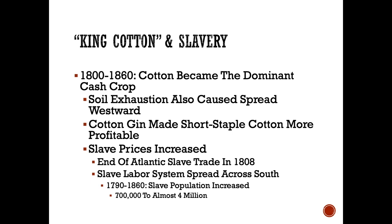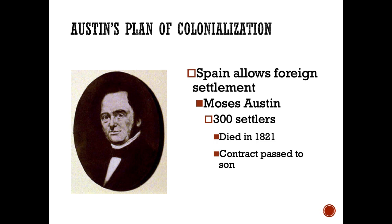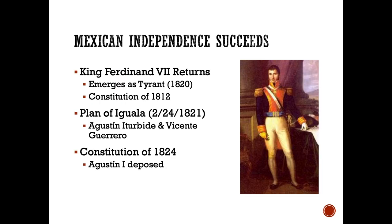As a result of the Panic of 1819, Spain was allowing foreigners to settle in the northwest province, because Spain couldn't get their own citizens to settle north of Mexico. Moses Austin, a Missouri investor who had lost a lot of money during the Panic of 1819, saw this as an opportunity. He went to San Antonio and agreed to bring in 300 settlers, but he died the next year and the contract passed to his son. At that same time, Mexico gained its independence from Spain.